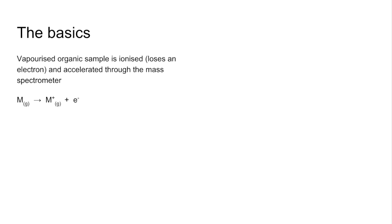We can represent that in the form of an equation, so the sample would be M gaseous going to M+ gaseous and the electron. The M+ gaseous is detected, that's what we call the molecular ion, and the spectrometer measures the mass to charge ratio, or M/Z for short, for the species detected.